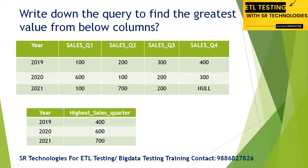The interviewer gives you this kind of data and they expect a specific output. For 2019 the output should be 400 — the highest sales. For 2020 the highest is 600, and for 2021 they want 700 — the highest sales picked from each year.